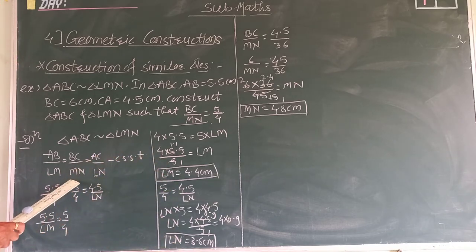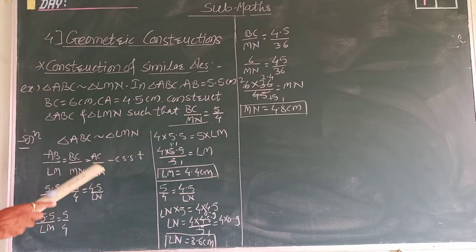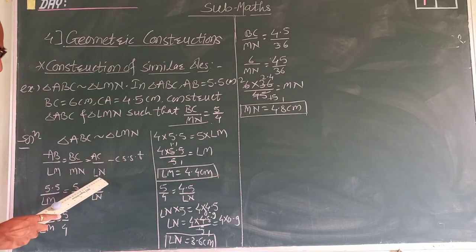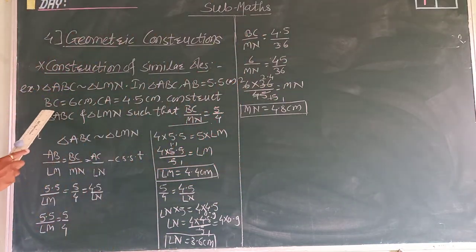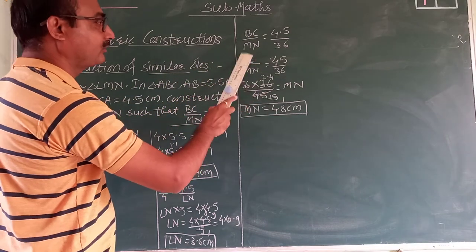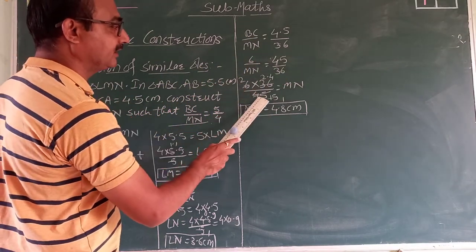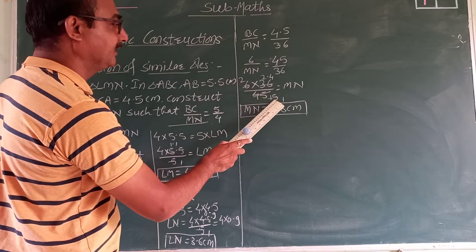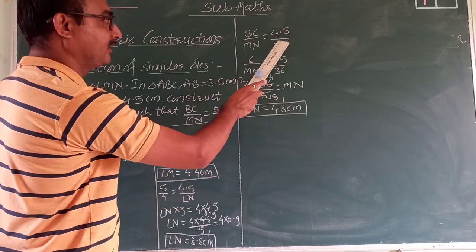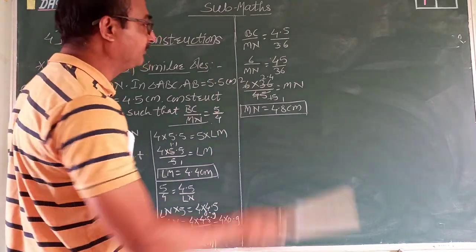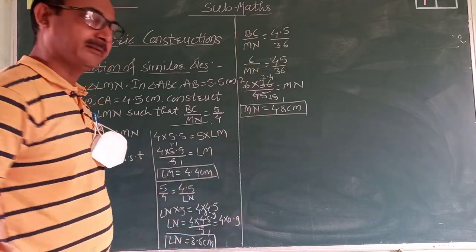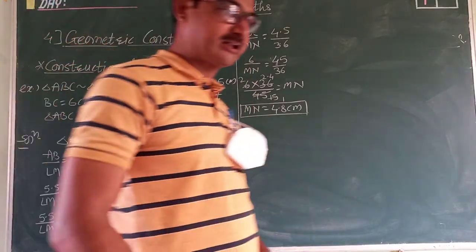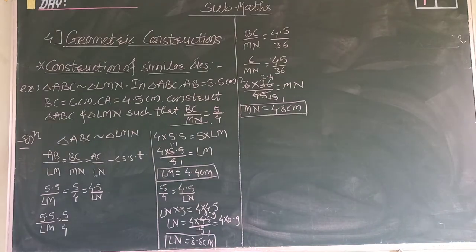Now take the ratio BC upon ML where AC equals 4.5 and we count 3.6. BC is given as 6, so putting that value and doing cross multiplication: three twos are three, fifteen are 45 — removing the decimal gives 45 upon 36, and this division gives ML equal to 4.8. Now we have all the values needed for the actual construction.